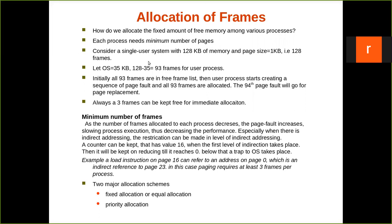Let us consider a single user system — meaning only one user process is running, plus the operating system. Consider a single user system with 128 KB of memory and page size of 1 KB, which means frame size is also 1 KB, giving us 128 frames total. The operating system occupies 35 frames (35 KB), leaving 128 minus 35 equals 93 frames for the user process.